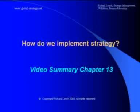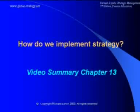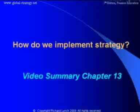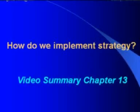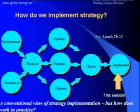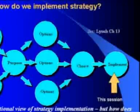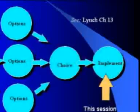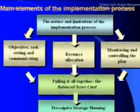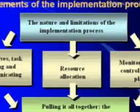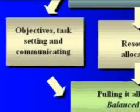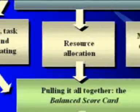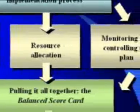Chapter 13 is concerned with implementing and controlling the strategic plan. By whatever method strategies are selected, there will come a time when every organisation will need to put its strategies into practice — to implement them. This chapter explores the basic steps involved in this process and the links between strategy development and implementation. It begins by defining the nature of the implementation process, then continues with sections on objectives and task setting, resource allocation, and monitoring and controlling the strategic plan.